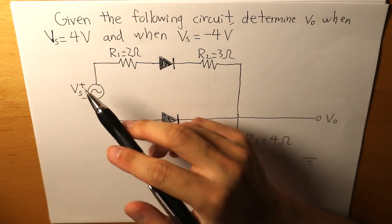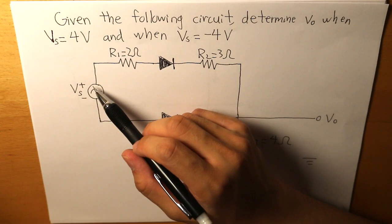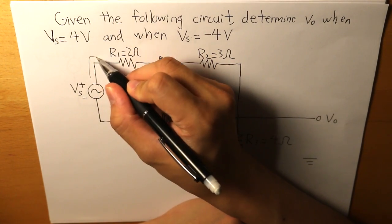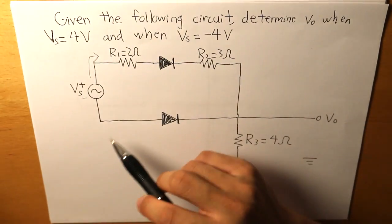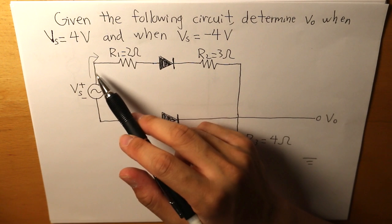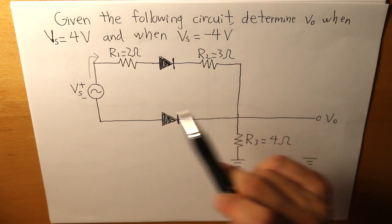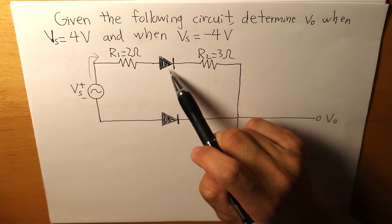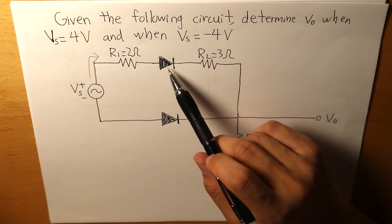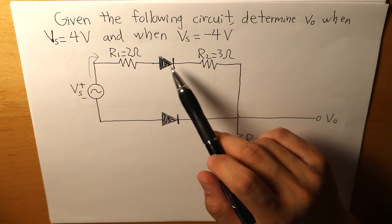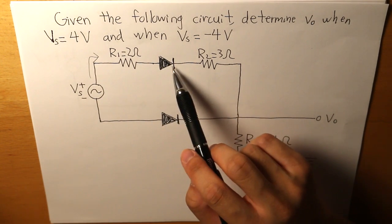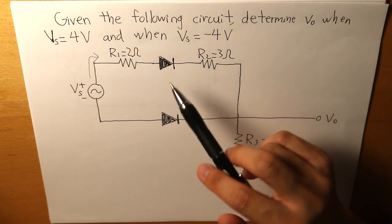So for that, the current is going to travel out from here and in this direction. And this current can only be traveled if this diode is facing the right direction. And in this case, it is facing the right direction because this current that is flowing in this direction is called forward bias.